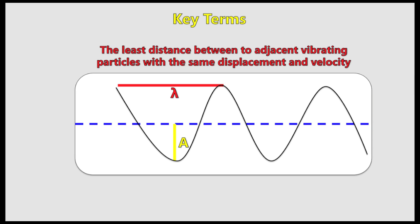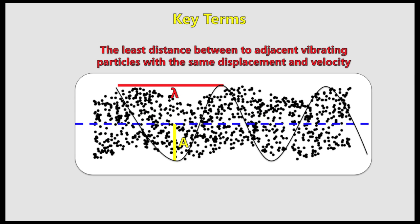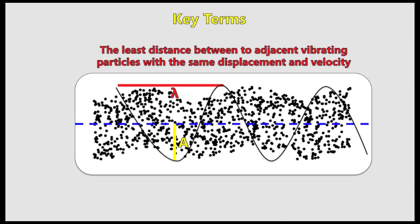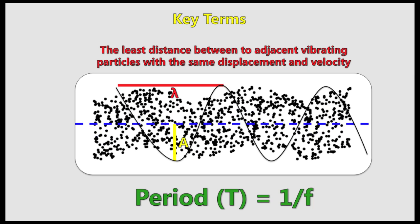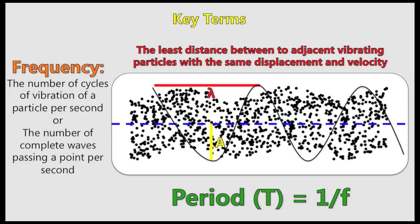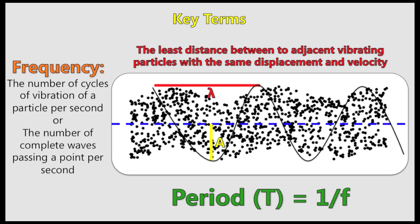One complete cycle is from the maximum displacement to the next maximum displacement. The period of the wave is the time taken for one complete wave to pass a fixed point, found by one over the frequency. The frequency of the wave is the number of cycles of vibration of a particle per second, or just the number of complete waves passing a point per second. The unit is hertz.